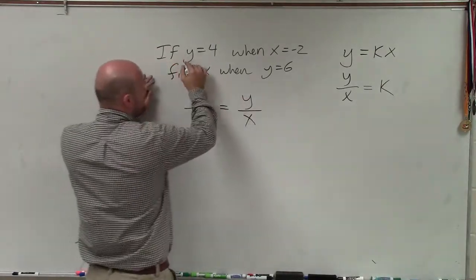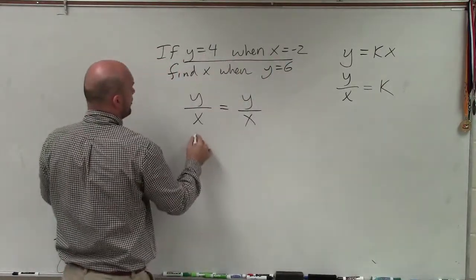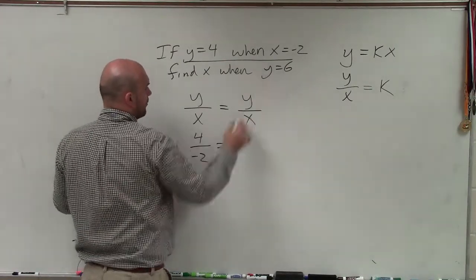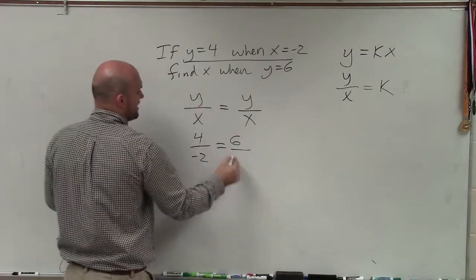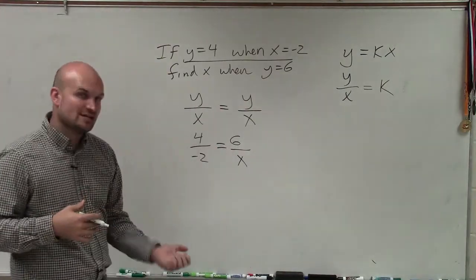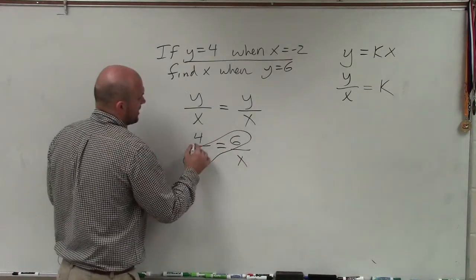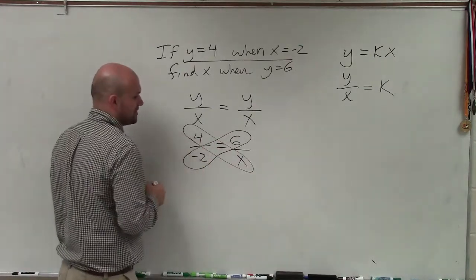So I have my first part, which I'm going to plug 4 in for y and negative 2 in for x, is equal to y equal to 6. And they want us to find x. Now, when we have a ratio equal to another ratio, I think the easiest thing to solve ratios is to apply the cross product.